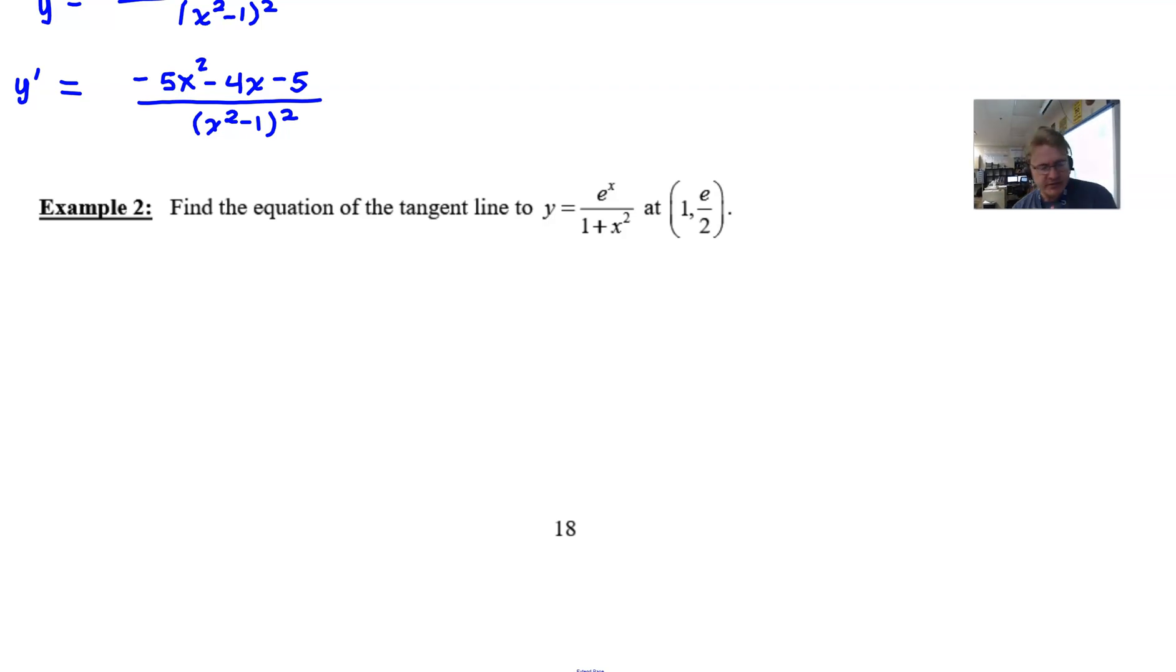So what we're doing is we're going to find the equation of the tangent line to y equals e^x over 1 plus x squared, and we're going to do so at this ordered pair (1, e/2). And for the first part of the problem, you're going to really temporarily forget that there's an ordered pair here. We're not focused on that so much. We are focused instead on making sure that we take this derivative y prime correctly.